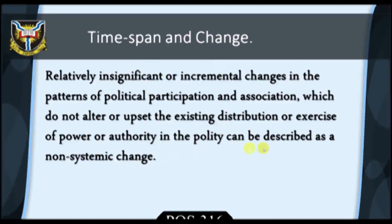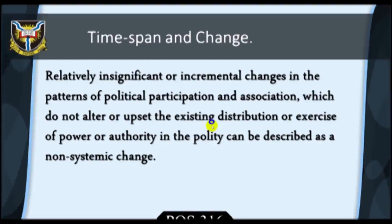Briefly, our discussion in this section centered on the concept of time span and change as analytical platforms for understanding the various patterns of Political Socialization — whether in the formative childhood or mature adulthood stages of an individual's development. Change refers to the consequences of Political Socialization and the patterns of authority within the polity. Political Socialization can produce systemic or non-systemic change: the former refers to a sudden, fundamental, or far-reaching change in the polity, while the latter refers to a minor or incremental political change.